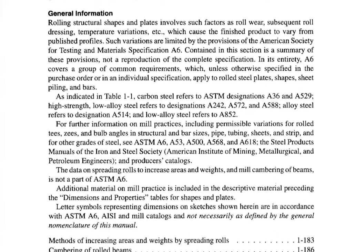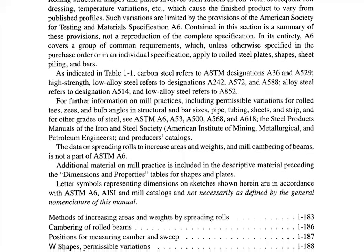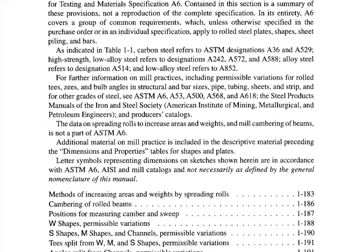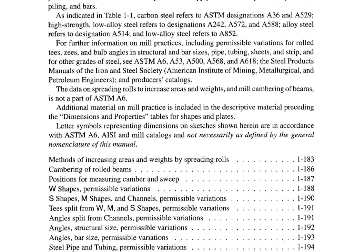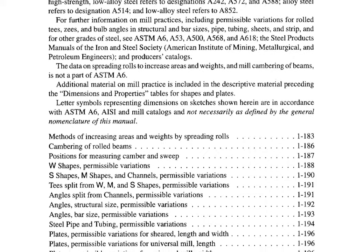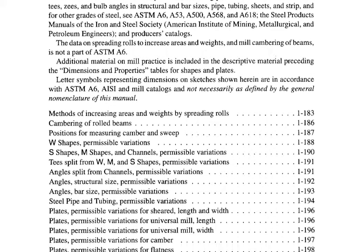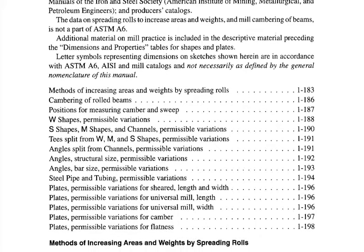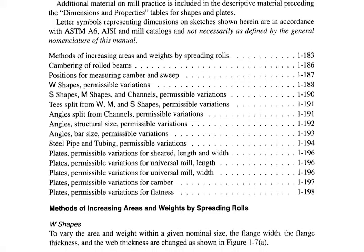A more in-depth discussion of mill tolerances and practices can be found in ASTM A6, standard specification for general requirements for delivery of rolled steel plates, shapes, sheet piling, and bars for structural use.